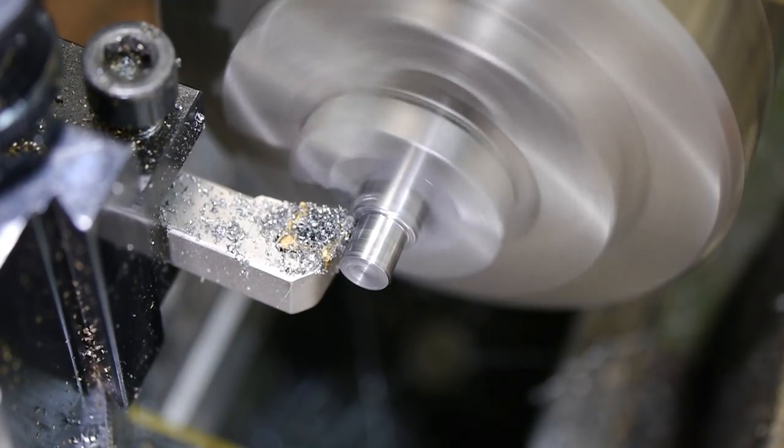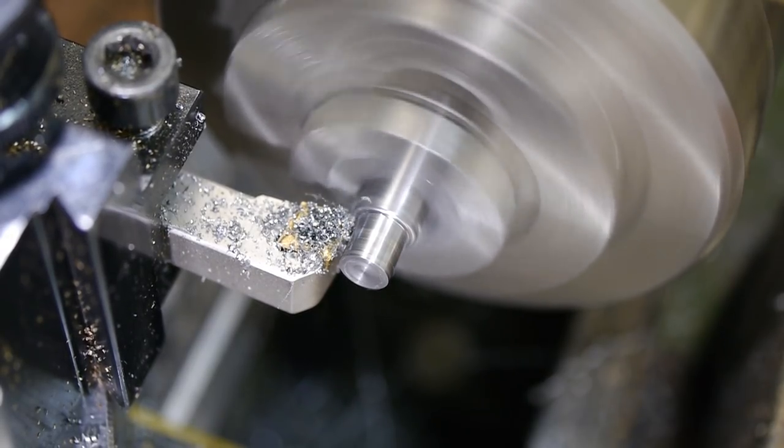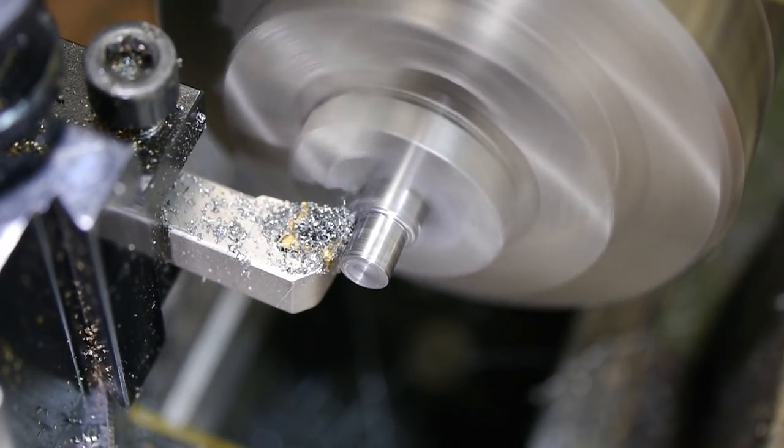I cut a 0.5mm relief behind the bearing, leaving a 0.5mm seat for the inner race of the bearing.